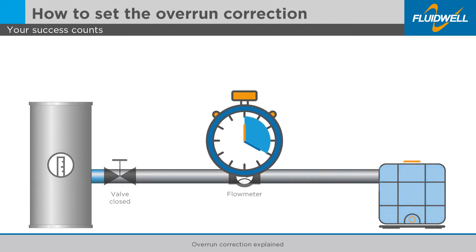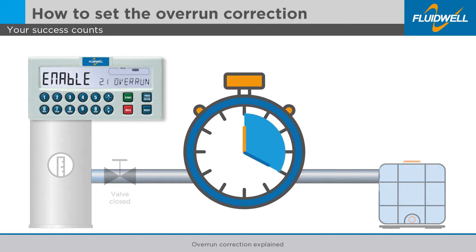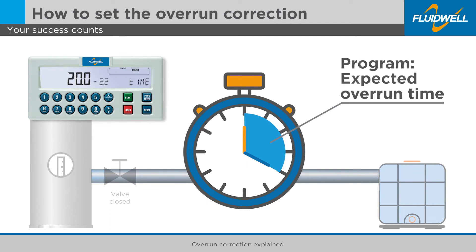How to set the overrun correction? The amount of time in seconds that needs to be programmed is the expected time required by the system to stop the batch process after the control output has deactivated. It may be necessary to add a little extra time to avoid an incorrect overrun correction and prevent spills.